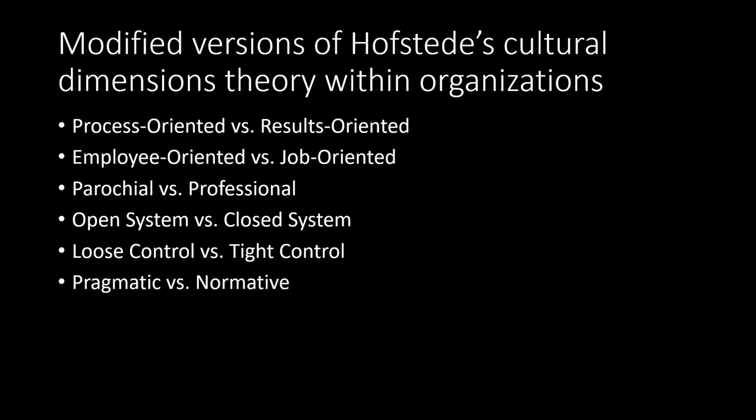Loose control versus tight control is another spectrum. Many managers want extremely high oversight over what each worker is doing, which can allow for finely tailored performance, but too much micromanaging and tight control reduces workers' self-esteem. Last but not least, pragmatic versus normative: in a normative organization you have very clear expectations, while a pragmatic orientation is outcomes-based — very matter of fact about how you want to get things done.